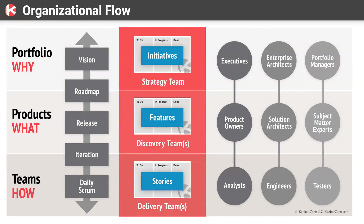At the third level, teams are focused on how to do the work. Teams collaboratively take a feature and break it into stories — this is where your engineers, analysts, and testers dig into the lowest-level detail to actually deliver work. There is full alignment and traceability in this model: the stories all connect back to a feature, the features all connect back to an initiative, which means everyone working in an organization like this has complete understanding of the context of the work and why they're doing it.